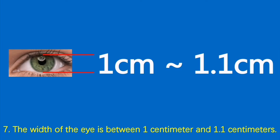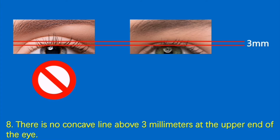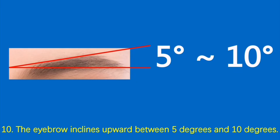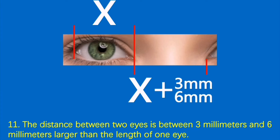Condition 7: The width of the eye is between 1 centimeter and 1.1 centimeters. Condition 8: There is no concave line above 3 millimeters at the upper end of the eye. Condition 9: The distance from the upper end of the eye to the eyebrow is between 1 millimeter and 2 millimeters larger than the width of the eye. Condition 10: The eyebrow inclines upward between 5 degrees and 10 degrees. Condition 11: The distance between two eyes is between 3 millimeters and 6 millimeters larger than the length of one eye.